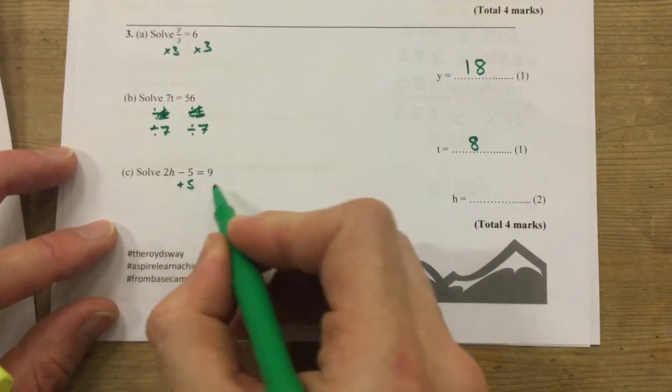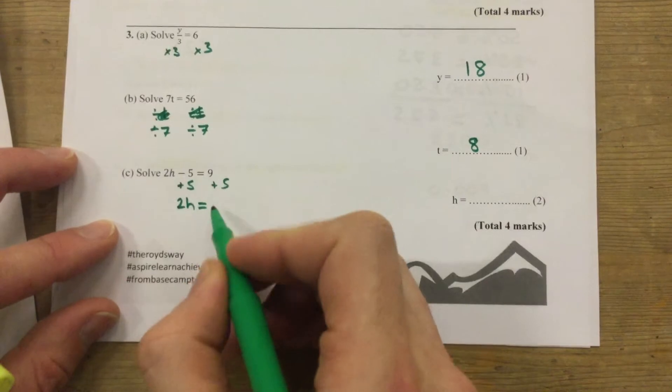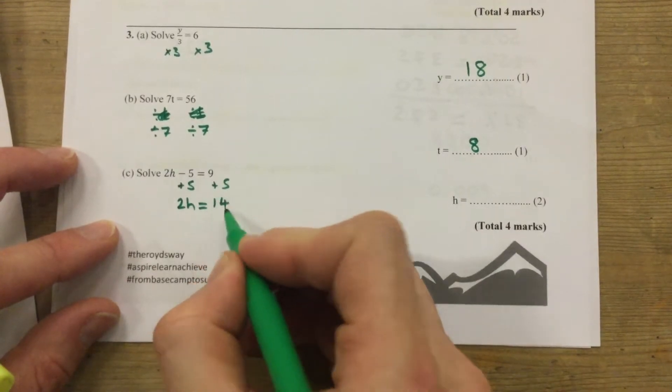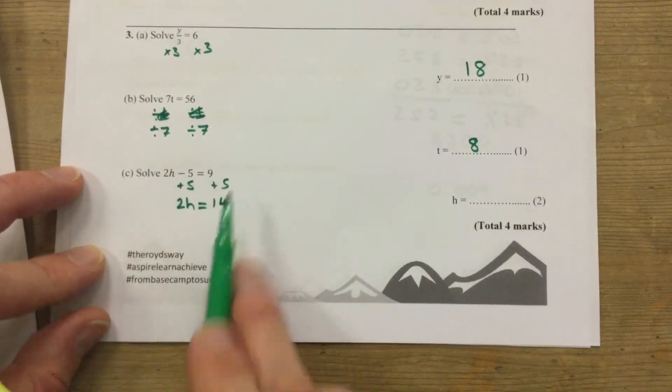The inverse of minus 5 is add 5. So this side's left to be 2h equals 9 plus 5, which is 14. I've kept my equal sides in line, the things on the left and the things on the right.